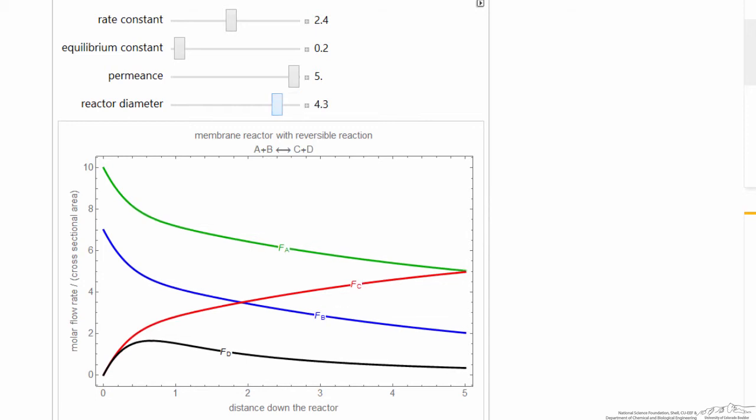So the idea is you can use this interactive simulation to better understand how removing a product in a membrane reactor where we have an equilibrium limited reaction can increase the conversion of the desired product.